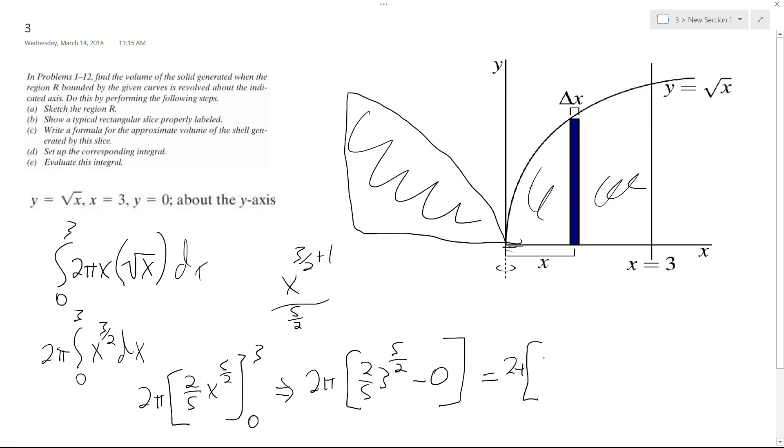And then this ends up being 8 root 3 over 5 times 2π. So we ultimately end up with the volume encompassed by wrapping this around the y-axis: this is 36π square root of 3 over 5.